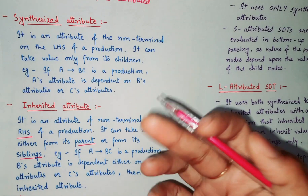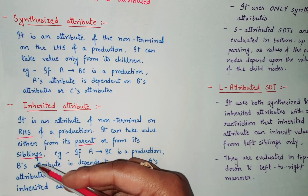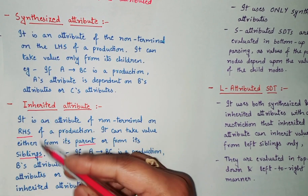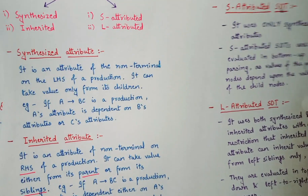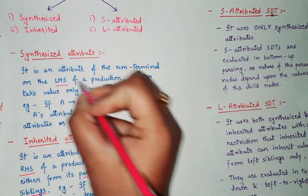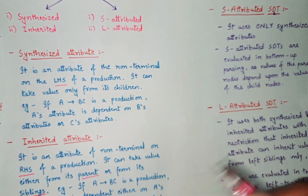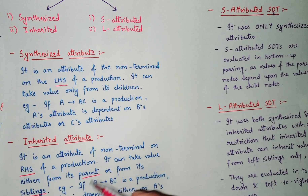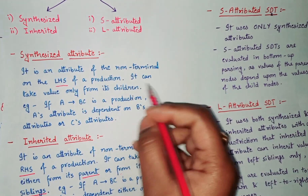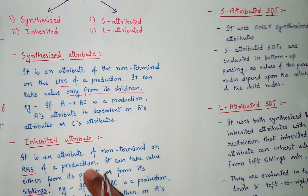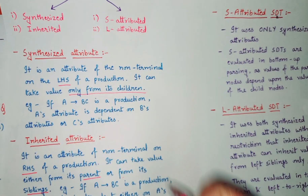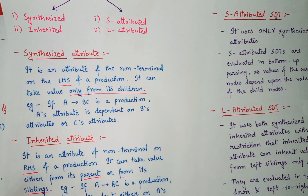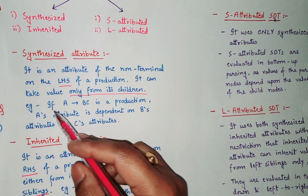In inherited attributes, values can come from parents, but remember it can also inherit from siblings. Now, a synthesized attribute is an attribute of the non-terminal on the LHS of a production — so inherited is RHS, synthesized is LHS. In synthesized attributes, the value can only be taken from its children. These two are completely opposite: inherited takes values from parent or siblings, while synthesized takes values only from children.